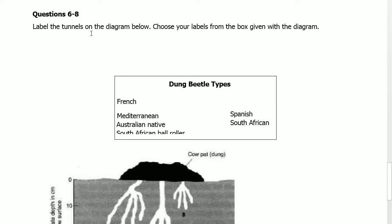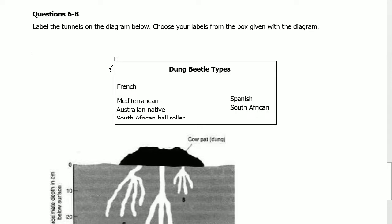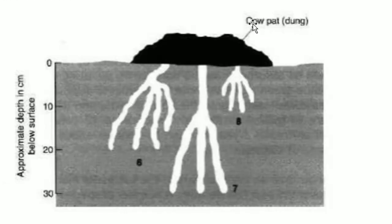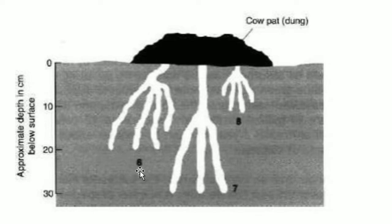Questions 6 to 8: Label the tunnels on the diagram. Choose your label from the box given in the diagram. The dung beetle types given are: French, Mediterranean, Australian Native, South African Ball Roller, Spanish, and South African. The diagram shows cow pasture or dung with approximate depth in centimeters below the surface: 0 cm, 10 cm, 20 cm, 30 cm. Question 6 is at approximately 20 cm, question 7 is at 30 cm, and question 8 is at 10 cm. I need to find keywords like '20 centimeter,' '30 centimeter,' and '10 centimeter' in the paragraph.